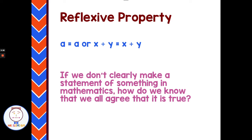Not to be confused with the reflexive property, which is even more challenging. A equals A. X plus Y equals X plus Y. That seems very obvious, but in math, if we don't clearly make a statement of something, how do we know we all agree it's true? It's so obvious, but still needs to be stated: A equals A.